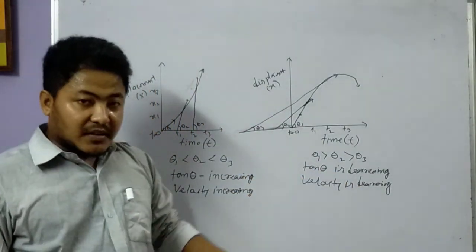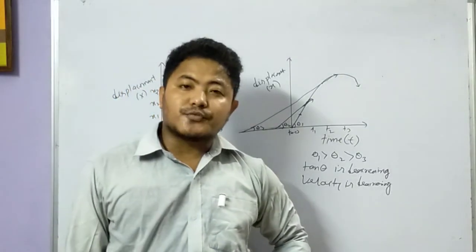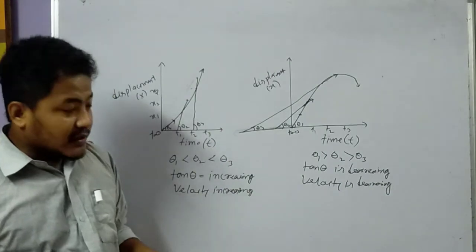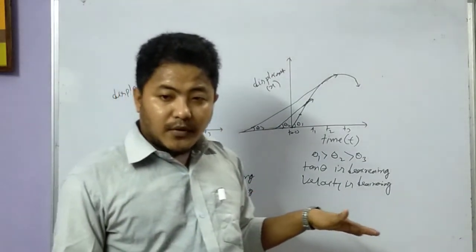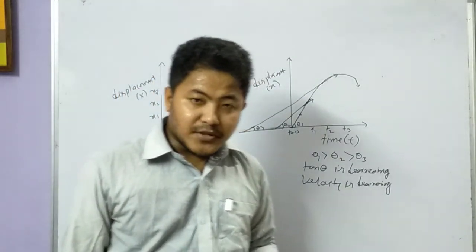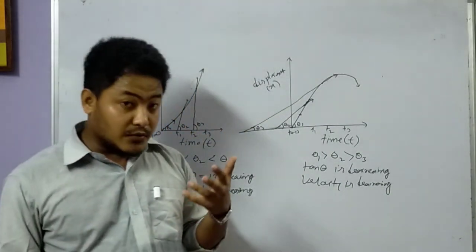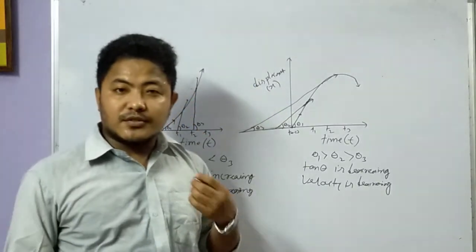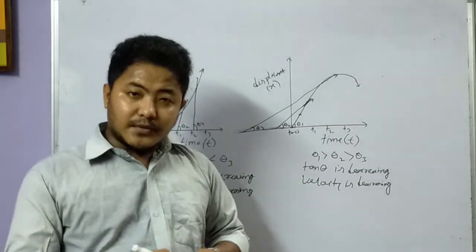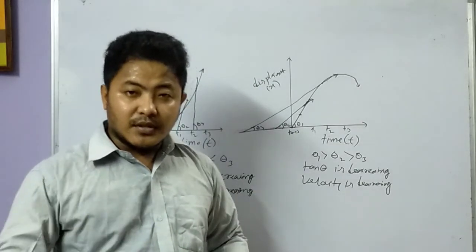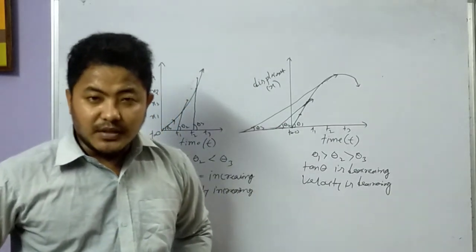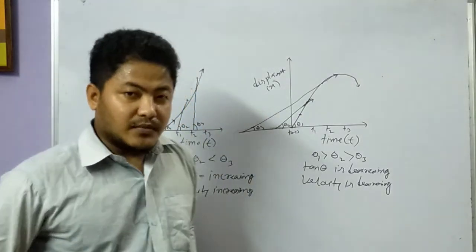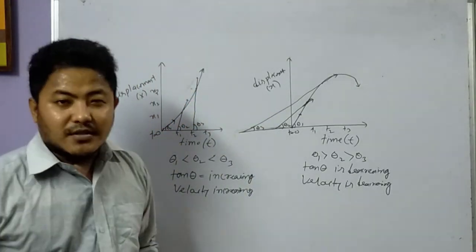Practice this at home. Any doubt, inbox me or you can personally ask me — I will try to clear it out. This is the basic concept of graphical representations in case of any two terms in kinematics. I hope you have got these things. For any further problems, just inbox me so I can identify your doubt. Thank you so much.